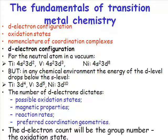So, let's start with the d-electron configuration. If you look at a neutral atom in a vacuum, now I cannot stress this point strongly enough. This is the electron configuration of a neutral atom in a vacuum.